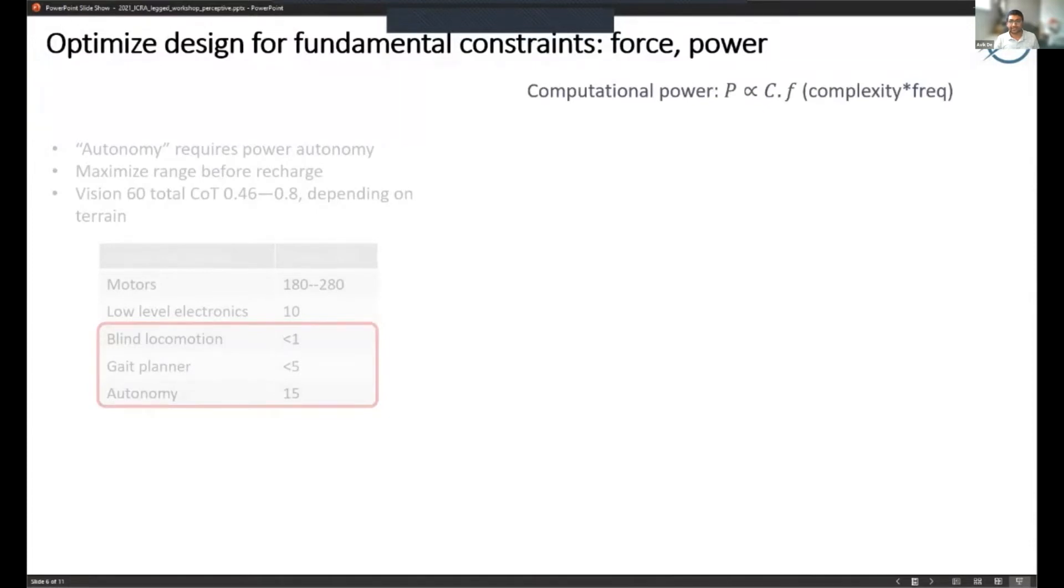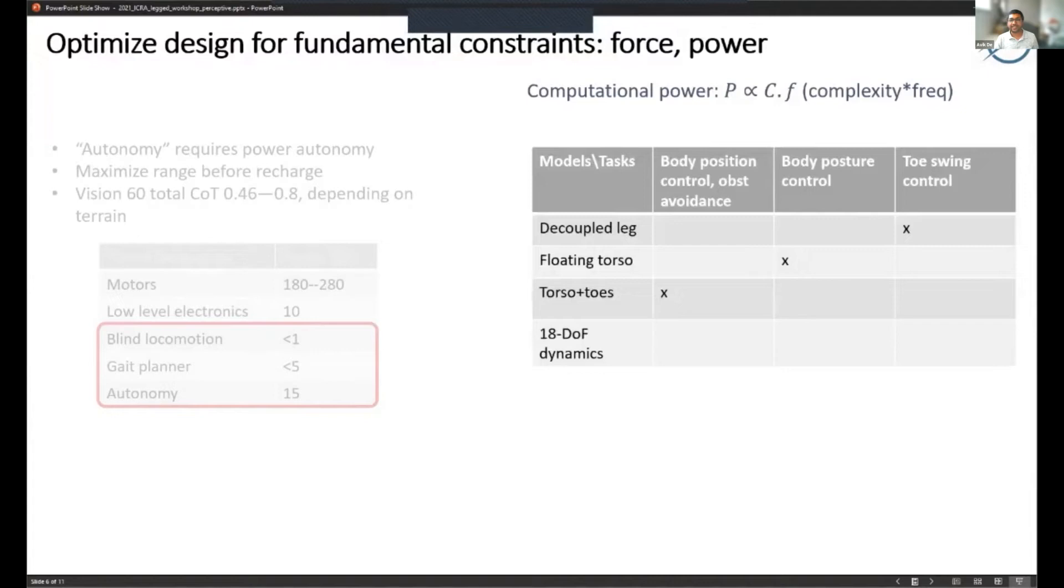One way to think about this is that computational power is approximately the complexity of the computation times the frequency at which it's running. Here's a rough table of the types of models that can be used for different types of calculations - starting from simple at the top: a decoupled single leg, a floating torso, maybe some model that includes both the torso and the toes, and a full dynamic model.